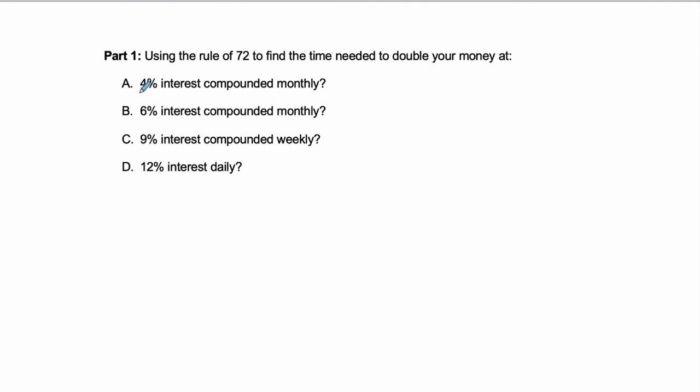So if you have some money, amount of money, notice I'm not even specifying here how much money you have, just that you have money you're investing in. And you're getting 4% interest compounded monthly. So that means each month you're getting 4% on top of what you had before. How long would it take to double your money?